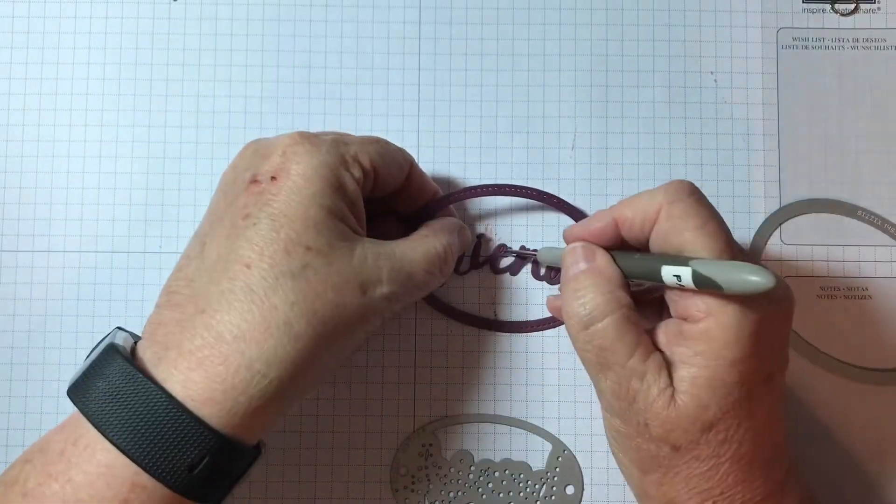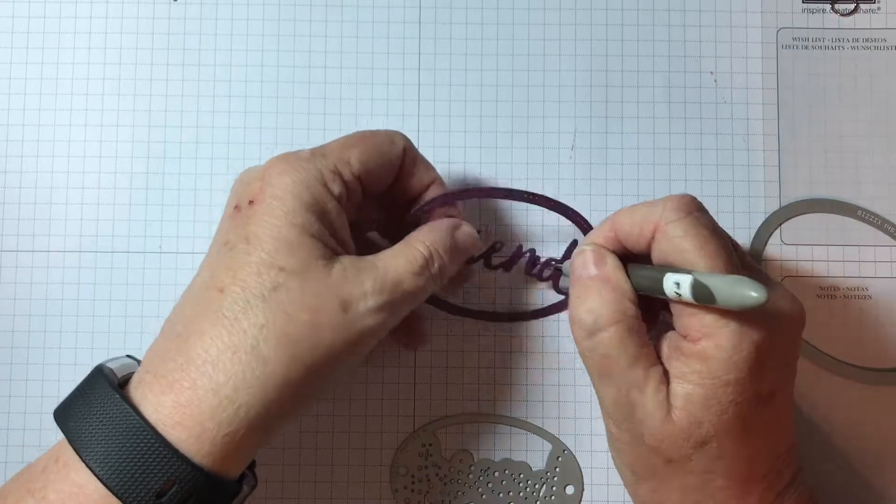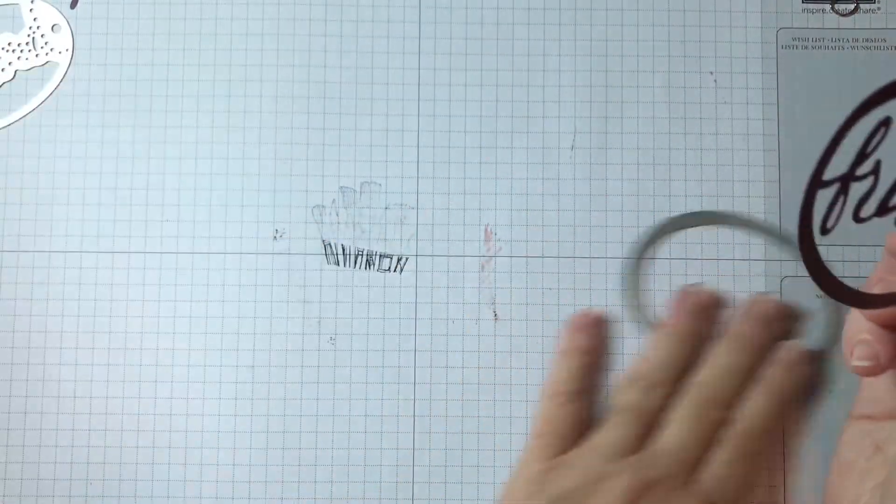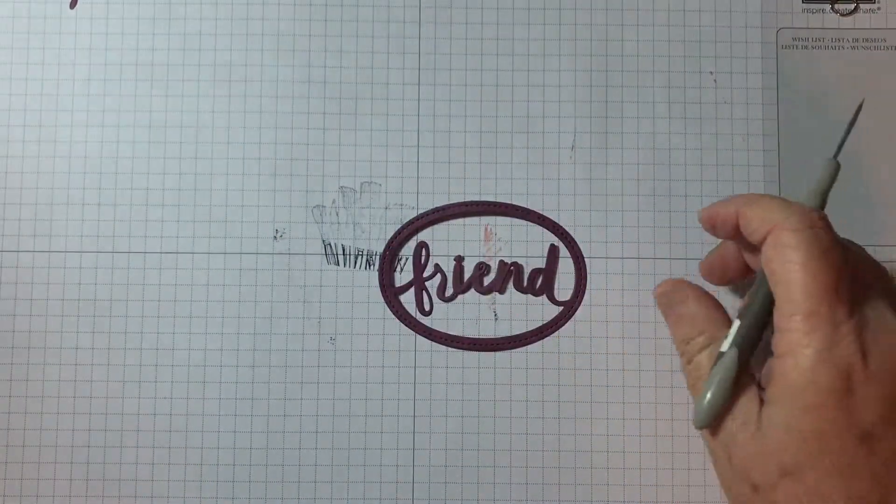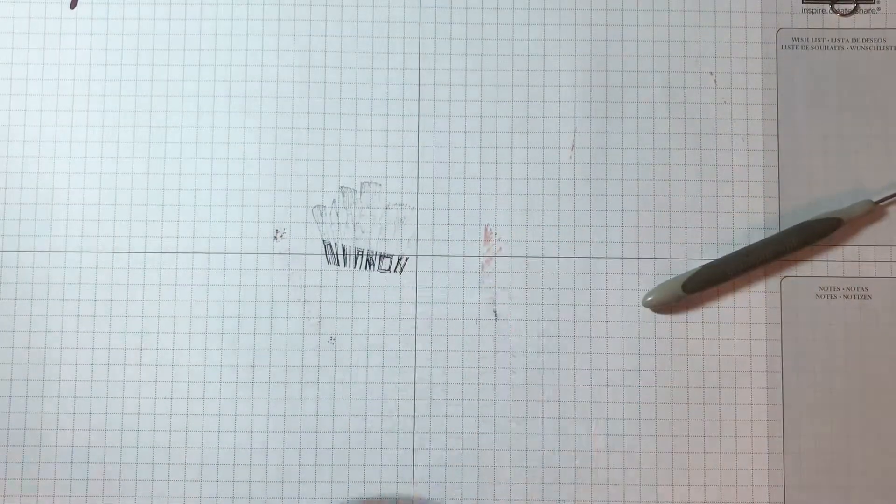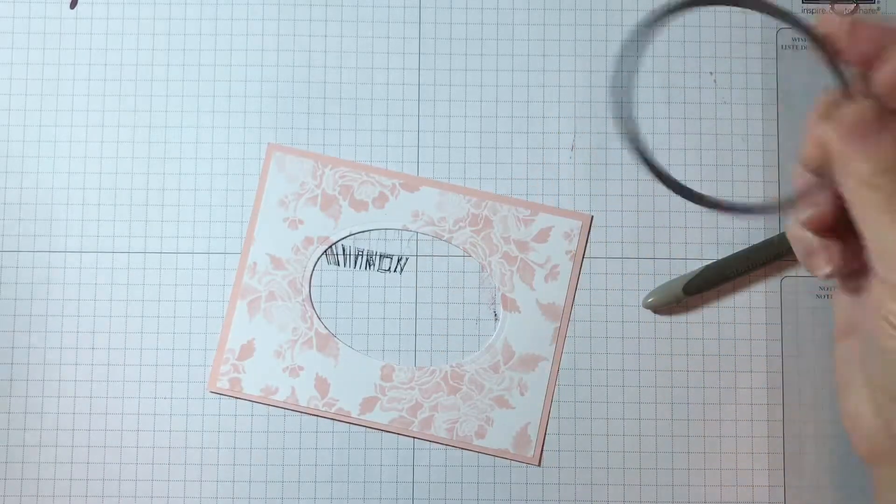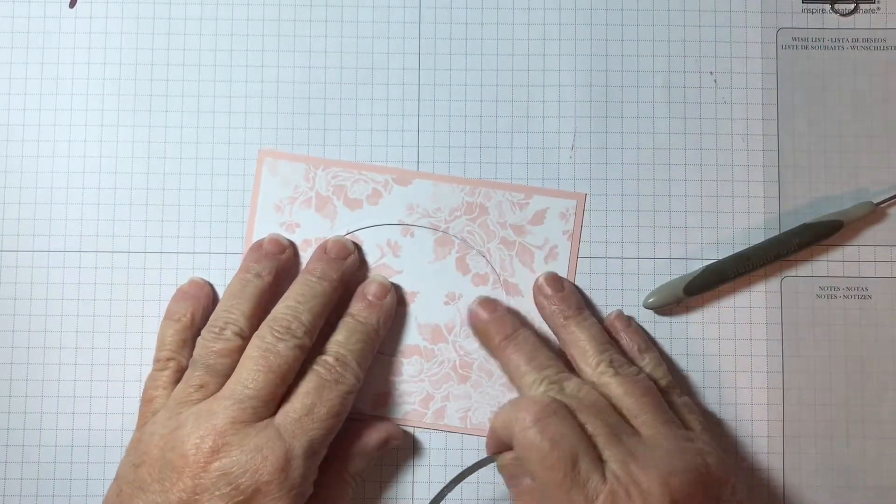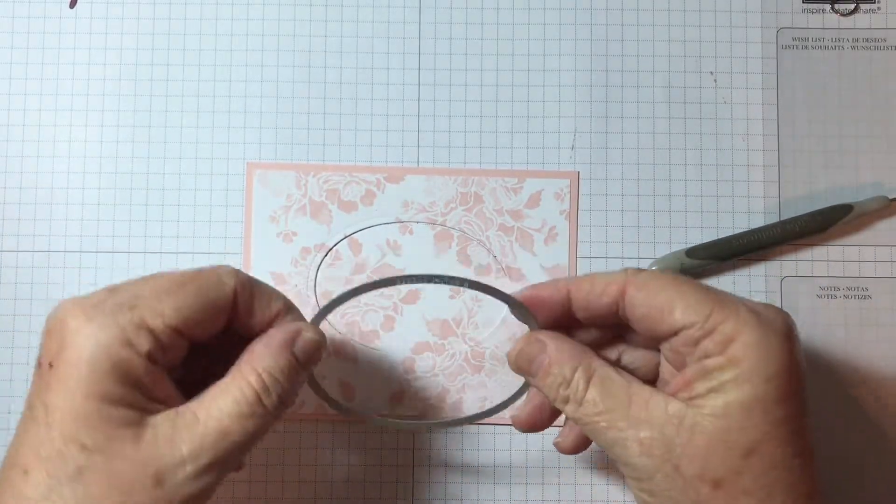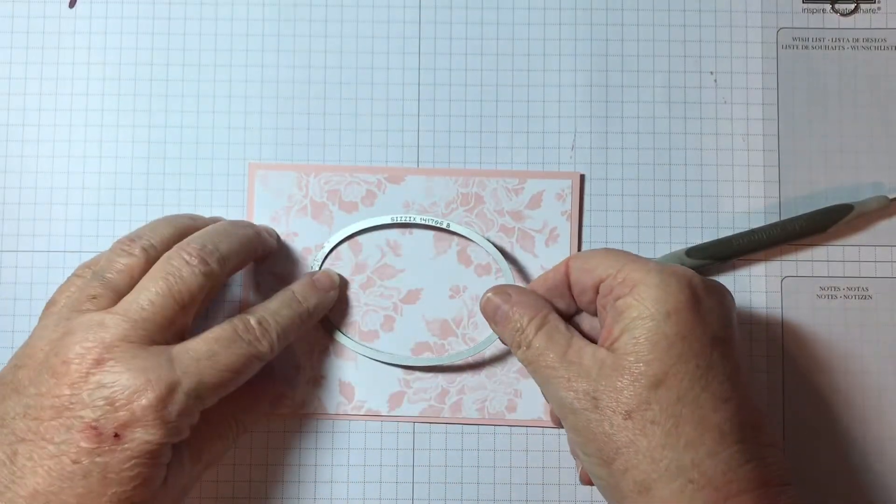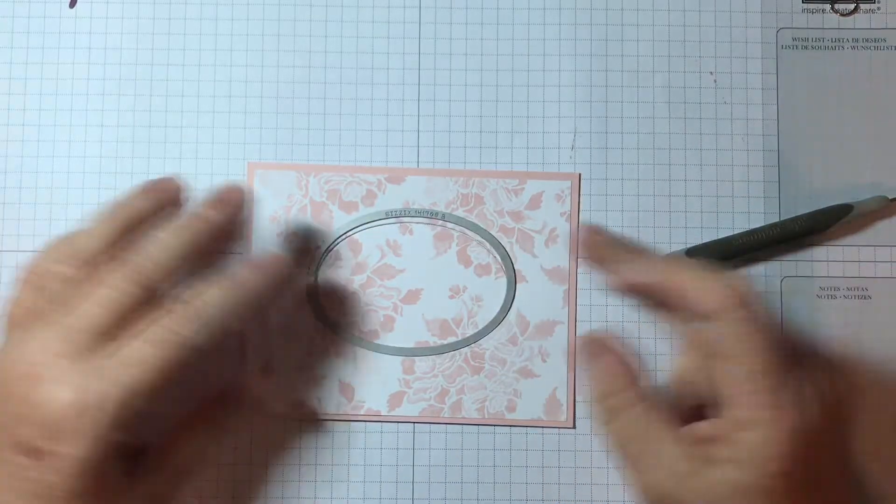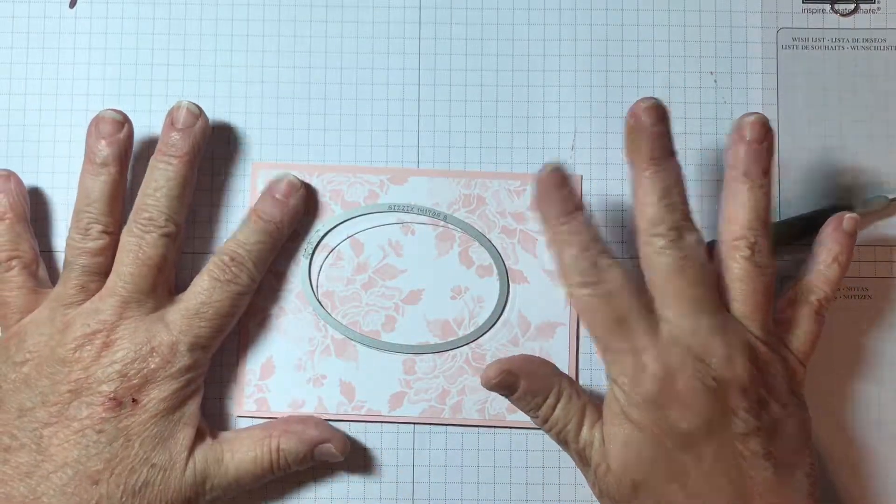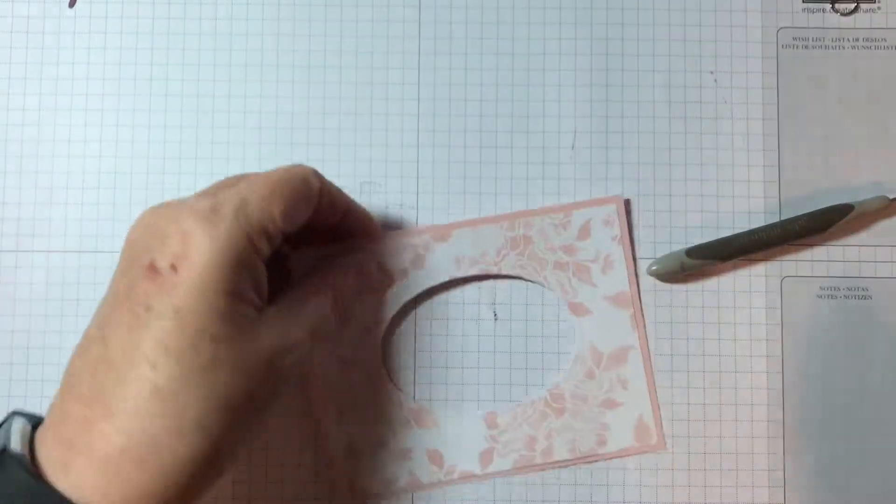I'm just going to go ahead and get rid of those letters. Okay, and so now we have our word friend. Now for the other part of the card, what I have done is I mounted this floral paper, which is powder pink, onto the powder pink background, and I used an oval framelit and I just went ahead and ran that through the Big Shot. I adhered this first and then cut both layers at the same time. It works great.